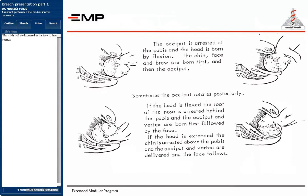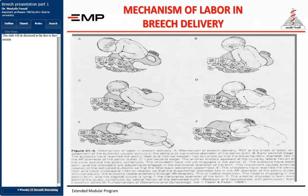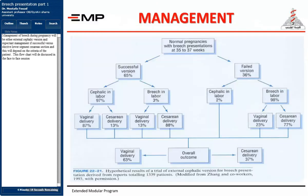Management of breech during pregnancy will be either external cephalic version with expectant management if successful, versus elective lower segment cesarean section, and this will depend on the criteria of the patient.